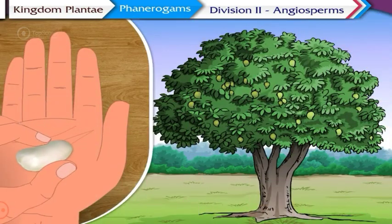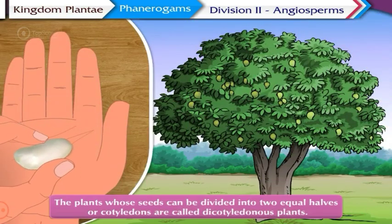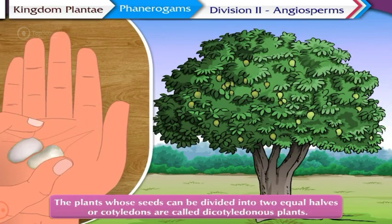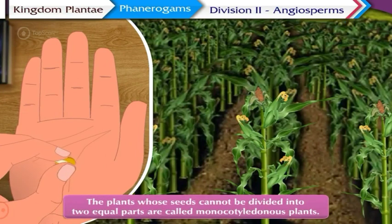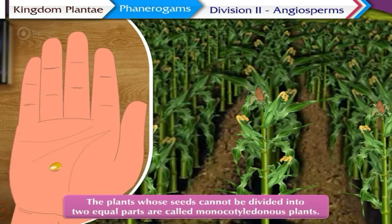The plants whose seeds can be divided into two equal halves or cotyledons are called dicotyledonous plants. And those whose seeds cannot be divided into two equal parts are called monocotyledonous plants.